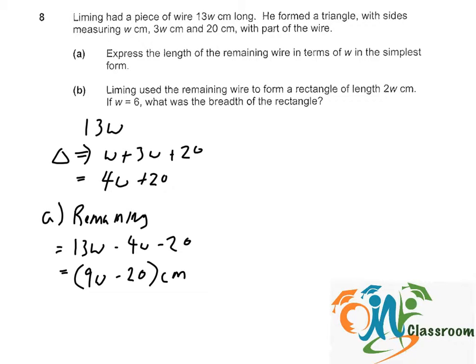And for part B, Li Ming used the remaining wire to form a rectangle of length 2W cm. If W is equal to 6, what was the breadth of the rectangle?